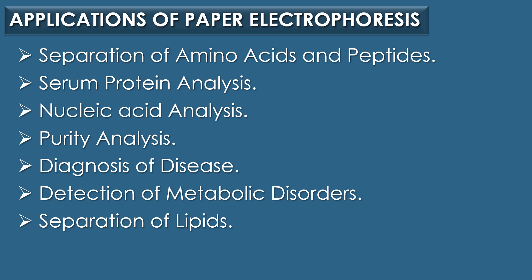The third application is nucleic acid analysis: nucleotides and their degradation products can be separated using paper electrophoresis. The fourth is purity analysis: it can help assess the purity of proteins, particularly enzymes or hormones, by separating components in a mixture. The fifth is diagnosis of disease: certain diseases such as multiple myeloma cause abnormal protein profiles in blood serum, and paper electrophoresis helps detect such conditions. The sixth is detection of metabolic disorders: abnormal amino acid profiles indicating metabolic disorders are identifiable by this technique. The seventh is separation of lipids, especially after their derivatization process.